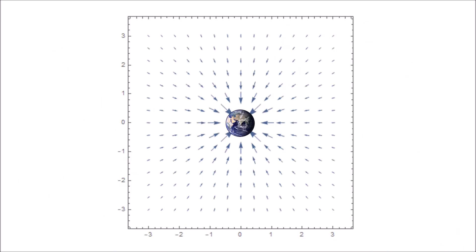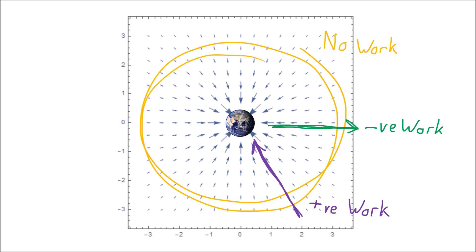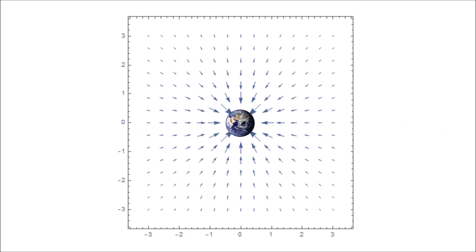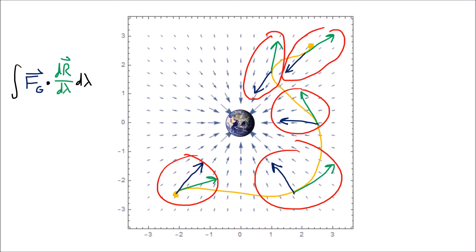So in this particular vector field, moving around in a circle involves no work done by the field, but moving inward or outward does — positive going in and negative going out. Overall when we have two points, no matter which path we take between them, it's only the inward and outward motions that contribute to the work. But looking at the geometric picture, it's almost miraculous that adding up all these dot products along these complicated paths gives a result that only depends on the endpoints.